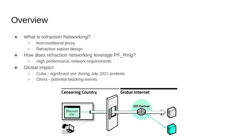The first question I want to answer is: what is Refraction Networking, and in what ways is it a non-traditional proxy that breaks some of the paradigms of proxying and VPNs? I want to talk through the design of the Refraction Network stations and some of the Refraction Networking protocol to give you an idea of how the system works.